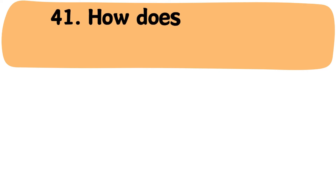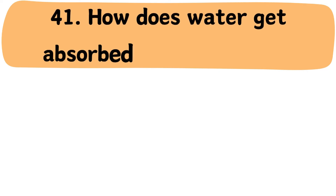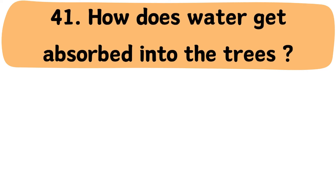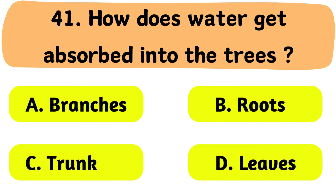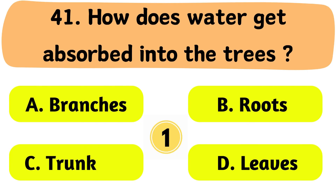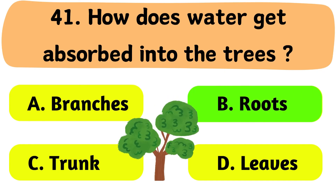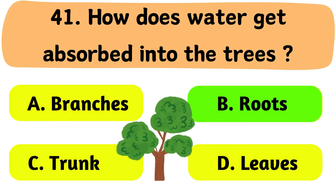Question No. 41: How does water get absorbed into trees? A. Branches. B. Roots. C. Trunk. D. Leaves. The correct answer is Option B: Roots.